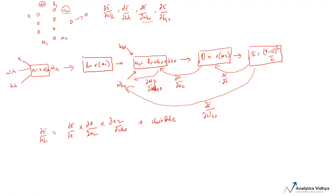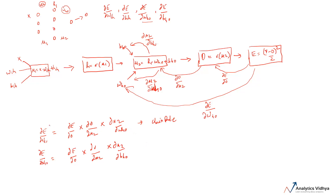Let's also calculate the change in error with respect to the bias between hidden and output, BHO. The process is the same: first calculate ∂E/∂O, then ∂O/∂U2, then ∂U2/∂BHO. The only difference is the last term — ∂U2/∂BHO instead of ∂U2/∂WHO. So in order to calculate these two gradients, we need four values: ∂E/∂O, ∂O/∂U2, ∂U2/∂WHO, and ∂U2/∂BHO.